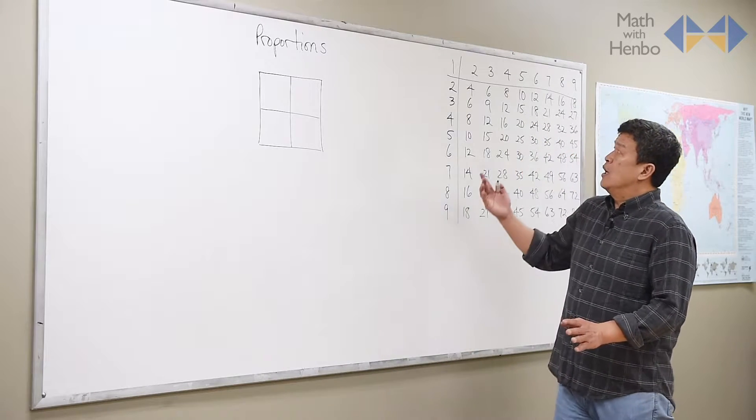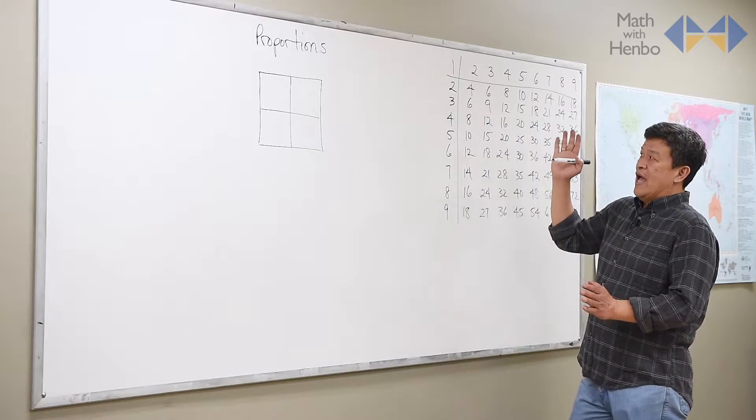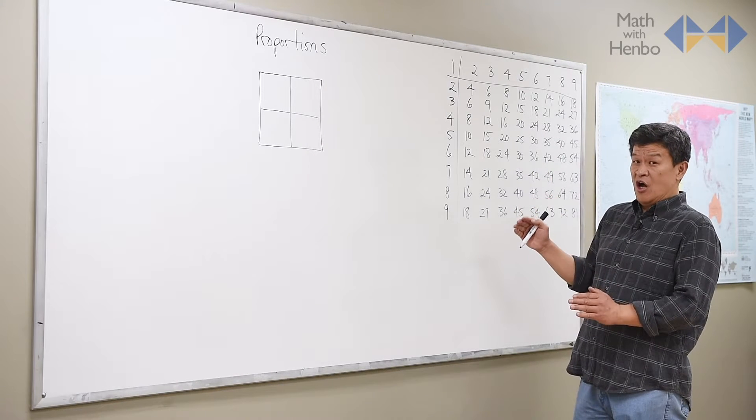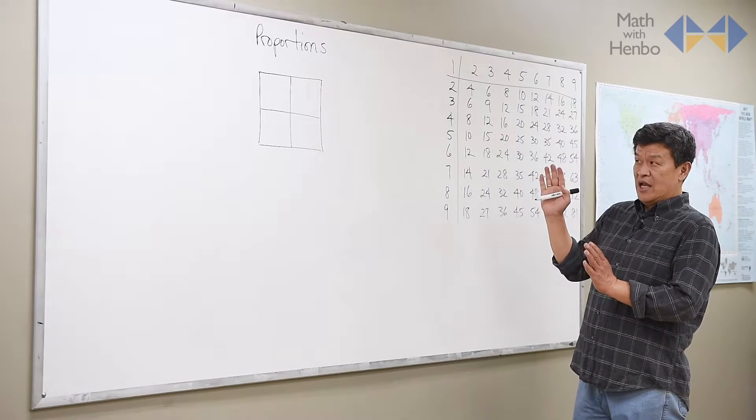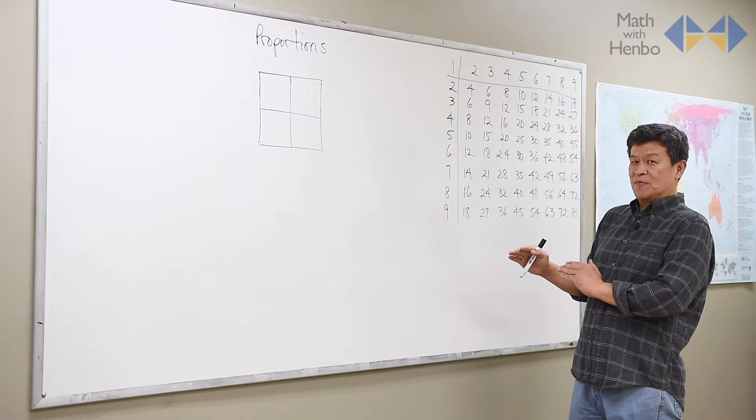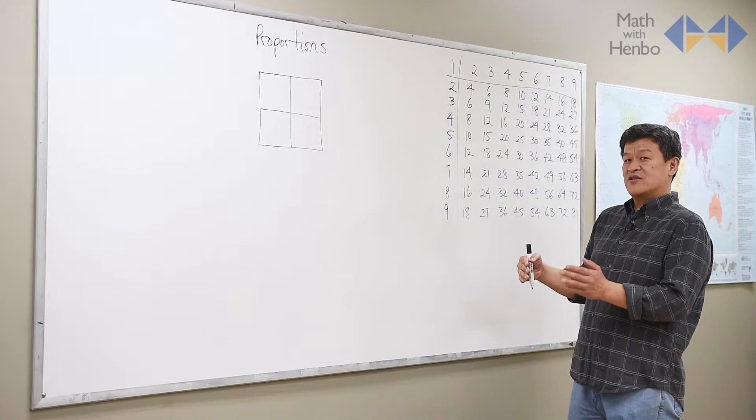For example, when it comes to any two numbers in the same row and same column, and you actually cross-multiply them, you should get the same answer. Let me show you.